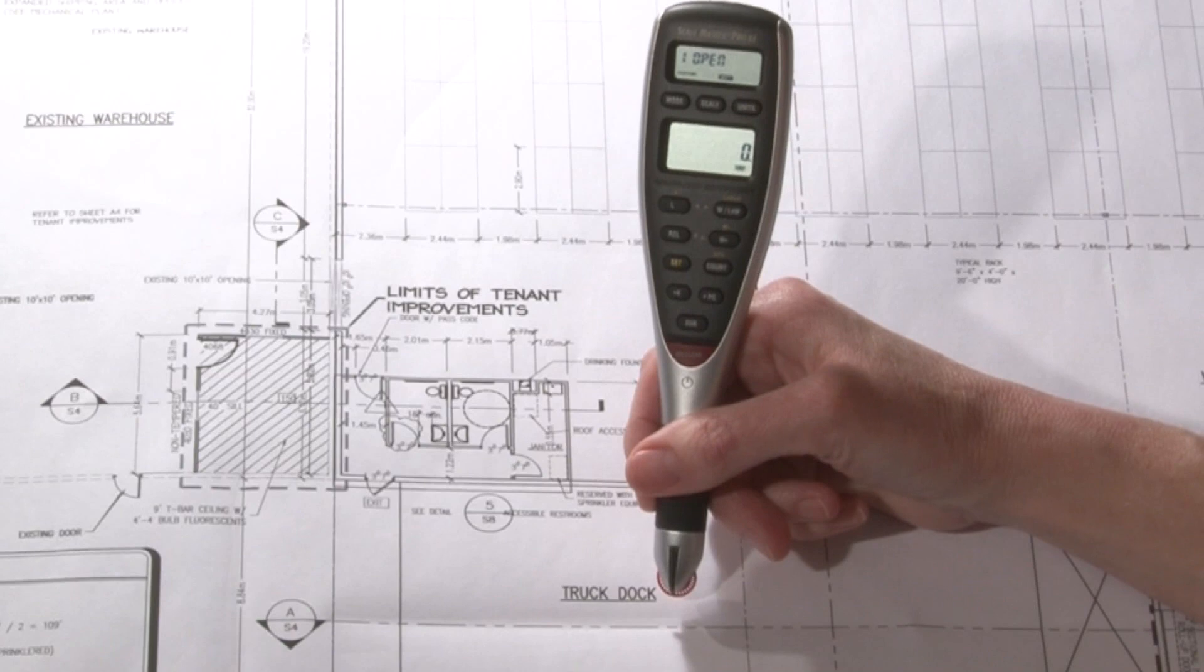Now there are two ways to set a custom scale: rolling or entering. For this example, I'm going to show you how to roll a custom scale.